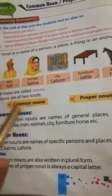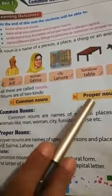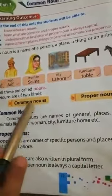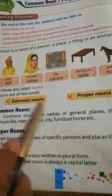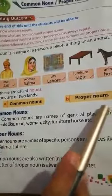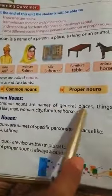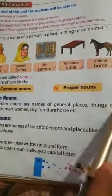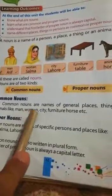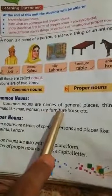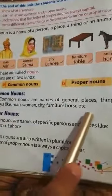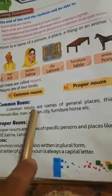اب ہم noun کی kinds کریں گے — common noun اور proper noun۔ Common noun عام اسم ہے اور proper noun خاص اسم ہے۔ Common nouns are names of general places, things, or animals, like man, woman, city, furniture, house, etc. Common noun میں عام جگہوں، چیزوں اور جانوروں کے ناموں کو کہتے ہیں۔